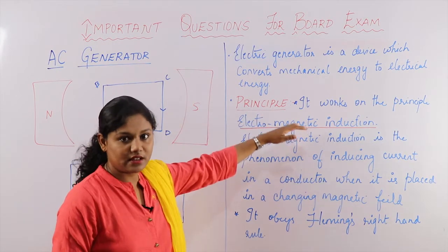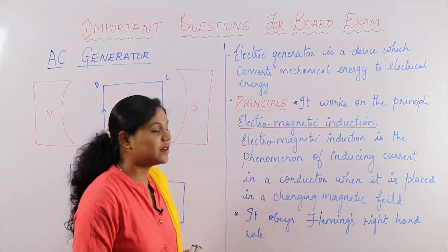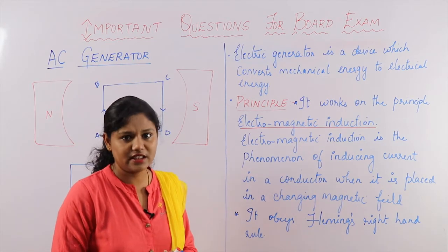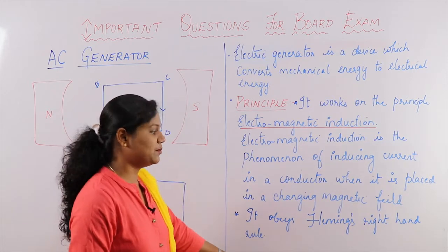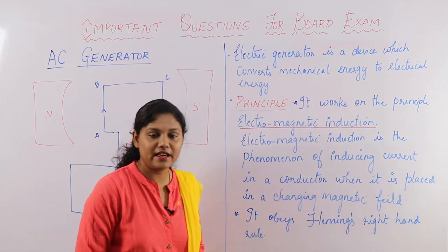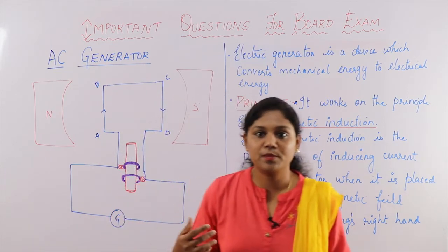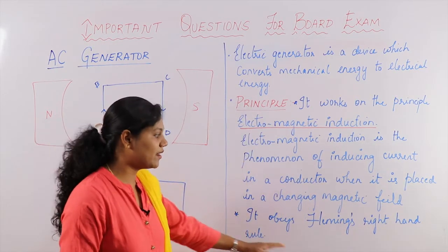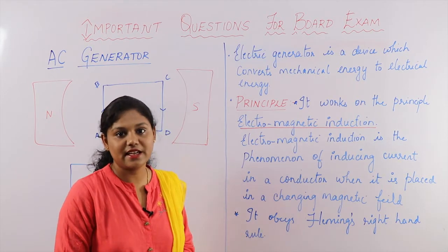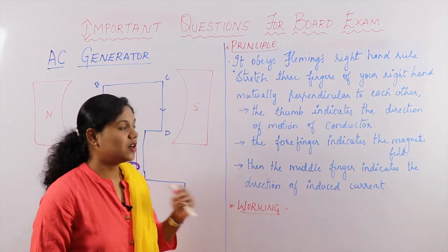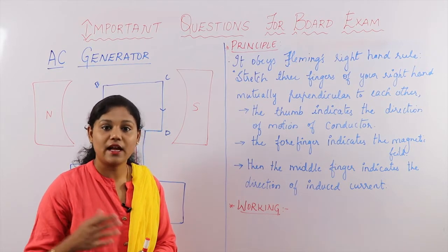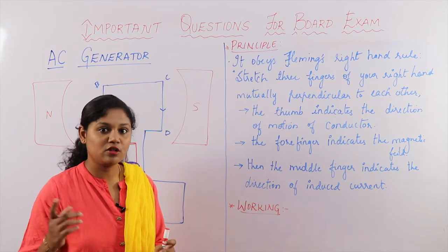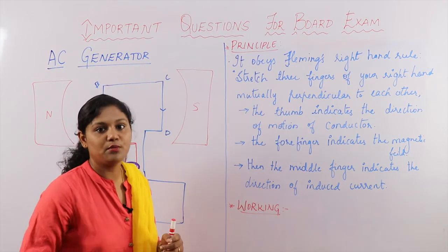The second point under principle is that it works on the principle of electromagnetic induction, explained as above. The second sub-point is Fleming's right hand rule. I have seen people writing that the electric generator works on the principle of Fleming's right hand rule — no, it doesn't work on that principle, but it follows Fleming's right hand rule. I have already put another video where I have summarized all the important laws of your syllabus.